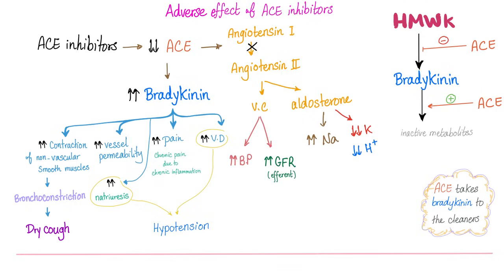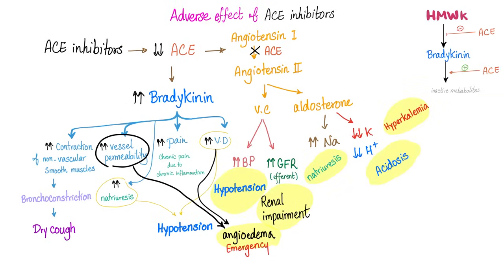When you take an ACE inhibitor, you won't be able to convert angiotensin I to angiotensin II, so you can't make aldosterone. You won't be able to secrete potassium, and you'll end up with hyperkalemia. Side effects of ACE inhibitors include dry cough, angioedema, hypotension, renal impairment (because you can't constrict the efferent arteriole to increase GFR), natriuresis, and metabolic acidosis with hyperkalemia.